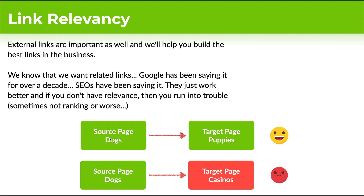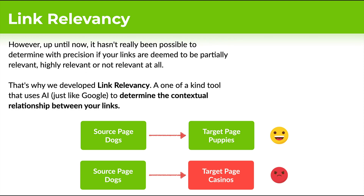With a simple diagram: if you have a dog page linking to puppies, this is a relevant link — they're both about dogs and animals, and that gives you a happy face, meaning Google's happy and you rank well. But if you have a source backlink pointing to a page on casinos, the topical relevancy is off, which can lead to worse rankings and even trouble if you have too many of these. Up until now it hasn't really been possible to determine with accuracy the topical relevance between pages and links — until now. We developed link relevancy: a one-of-a-kind tool that uses AI just like Google to determine contextual relationships between your links, giving you the information to build the ideal link profile.